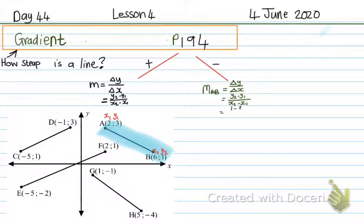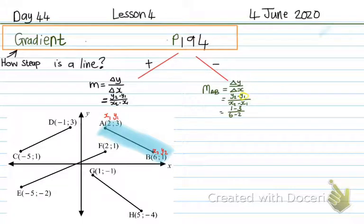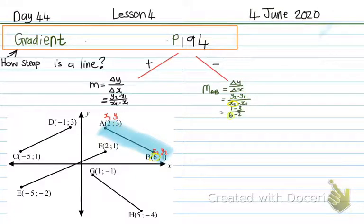Then I have 1 minus 3 over 6 minus 2 if I just substitute it in. So I see I have y2, so in the place of y2 I'm going to put 1. Then I have y1 — the y-coordinate of A which is 3 — and I put it in there. The same with the x-coordinates: x2 is the x-coordinate of B and that is 6, and the x-coordinate of A I substitute in.